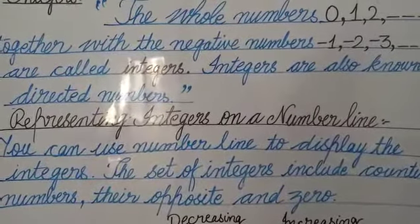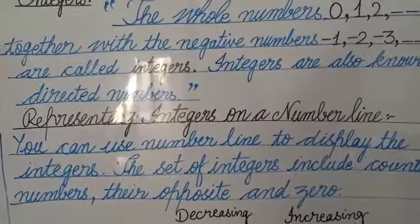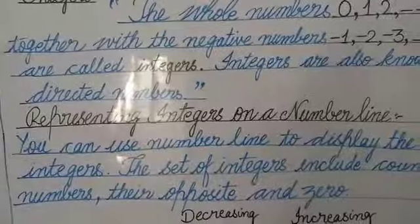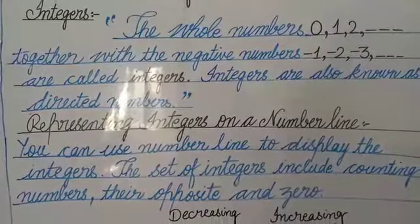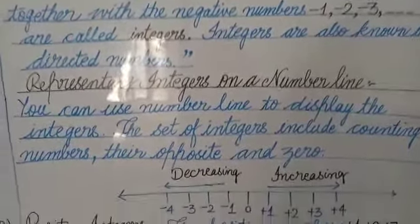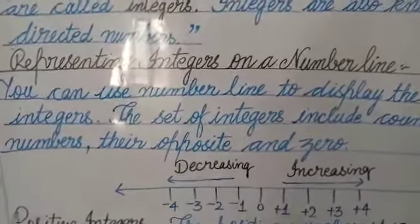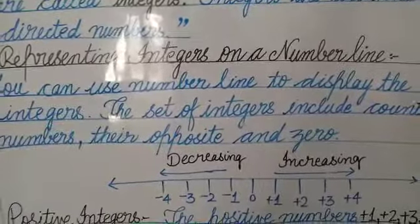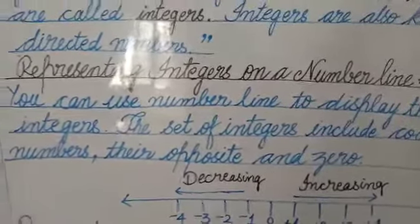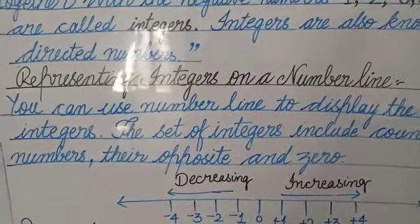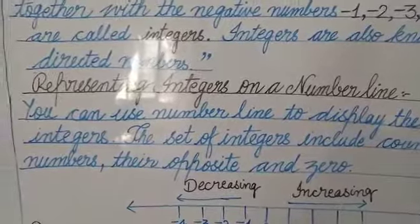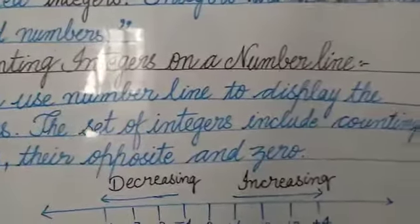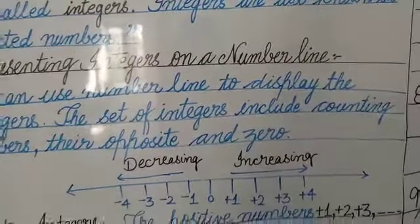Integers are also known as directed numbers. We call them directed numbers. So now we are representing integers on a number line. How do we represent integers on a number line? You can use a number line to display the integers.